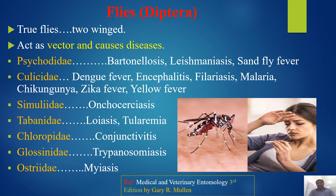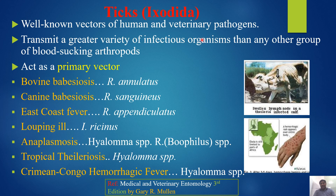You can observe in this picture the infection due to mosquitoes. Ticks are included in the order Ixodida and are well-known vectors of human and veterinary pathogens. They transmit a greater variety of infectious organisms than any other group of blood-sucking arthropods. They act as primary vectors for: bovine babesiosis (Rhipicephalus annulatus), canine babesiosis (Rhipicephalus sanguineus), East Coast fever (Rhipicephalus appendiculatus), louping ill (Ixodes ricinus), anaplasmosis (Hyalomma or Rhipicephalus species), tropical theileriosis (Hyalomma species), and Crimean-Congo hemorrhagic fever (Hyalomma species).